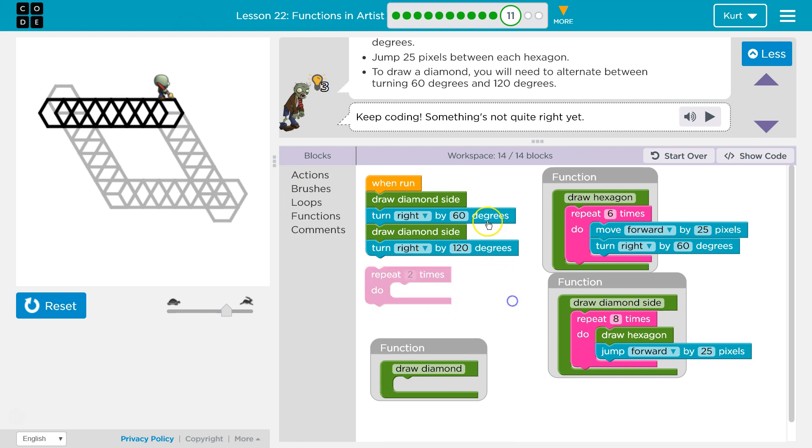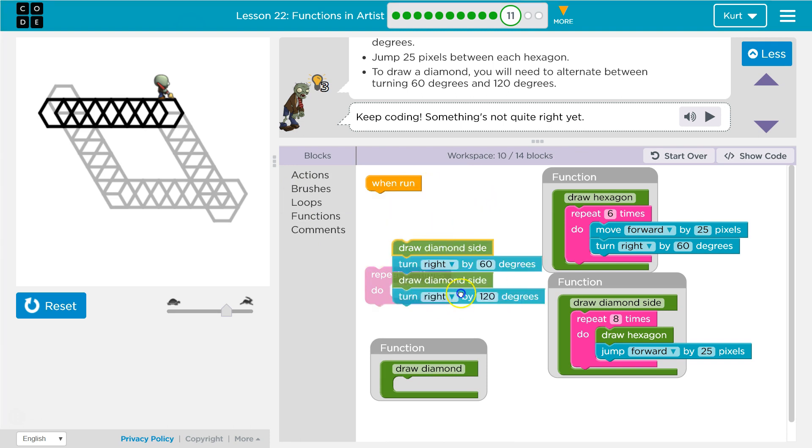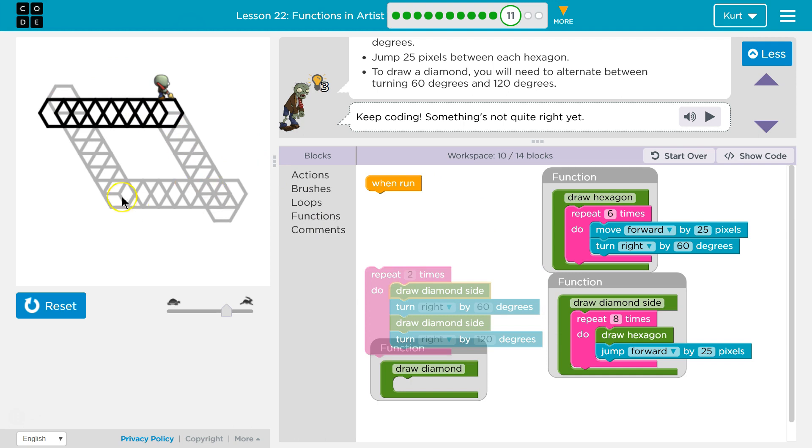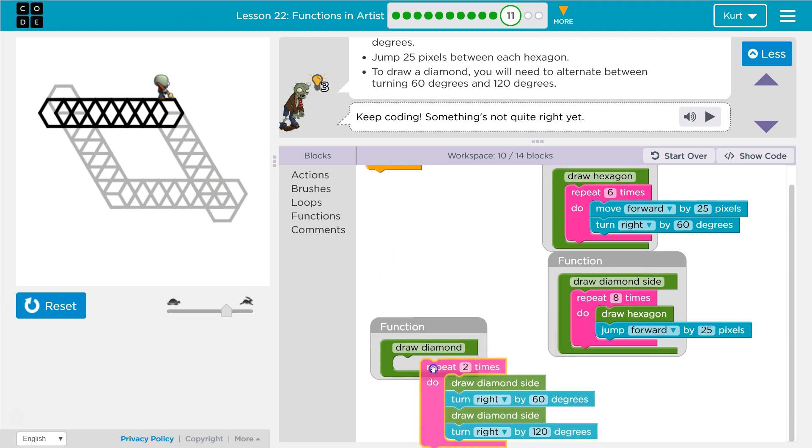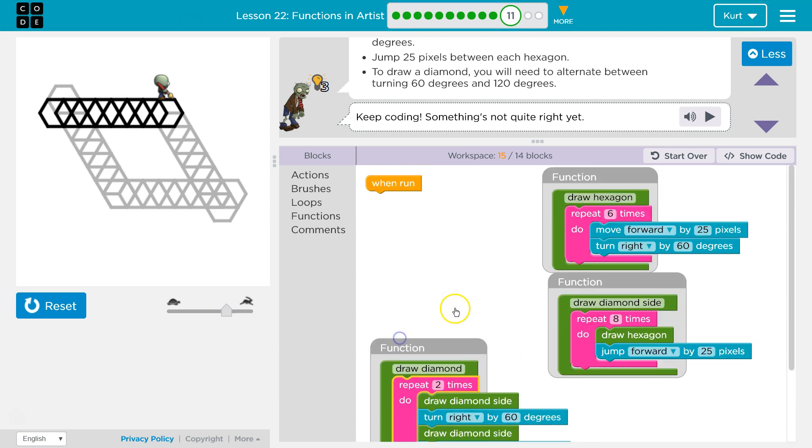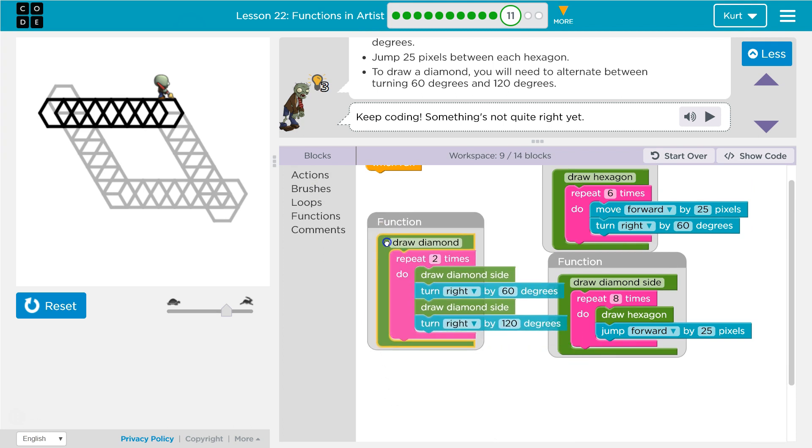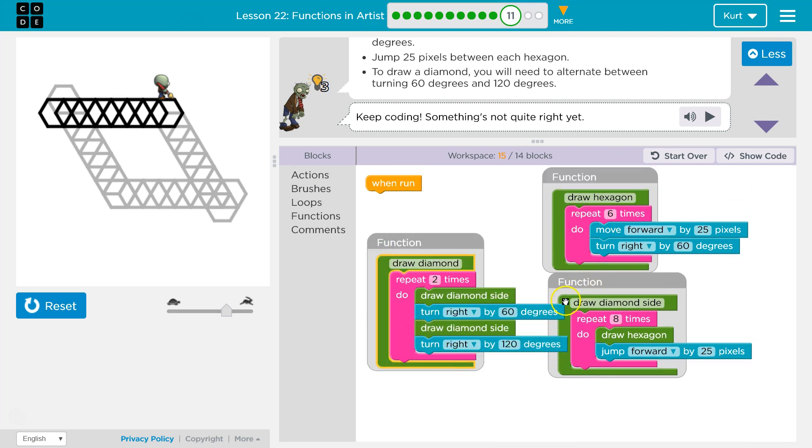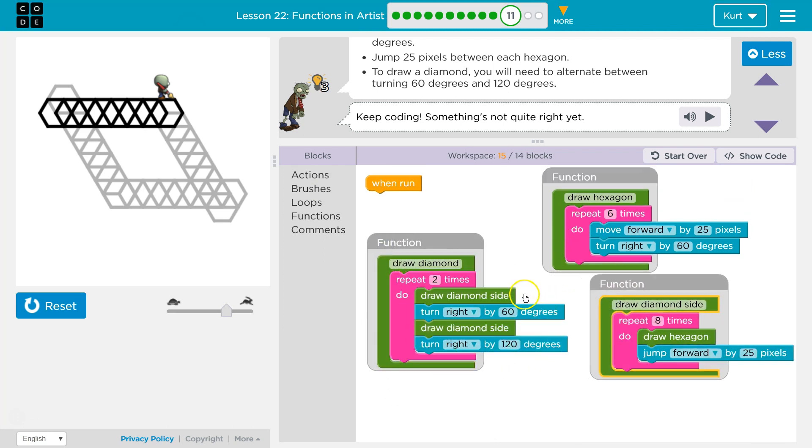So let's loop it two times. We can't loop it four because our turns are different each time. So we need to do this two times, which will draw the complete side and then another complete side. So draw a diamond function is going to do all of that. Now we have too much code.